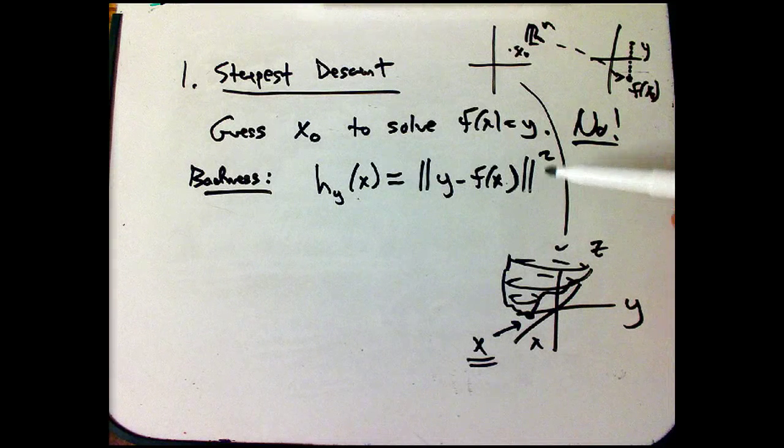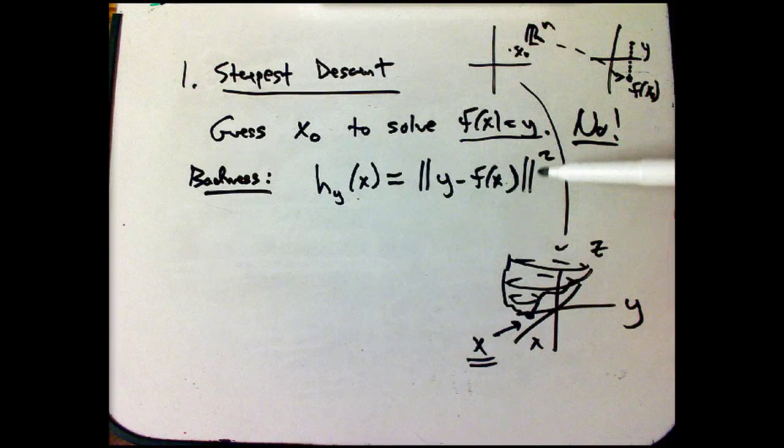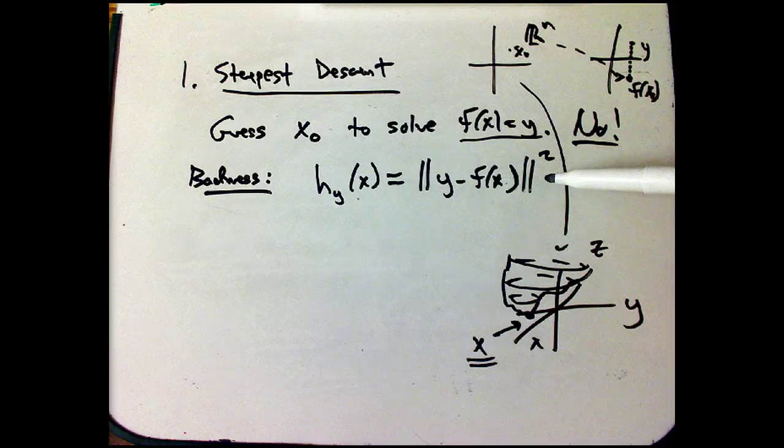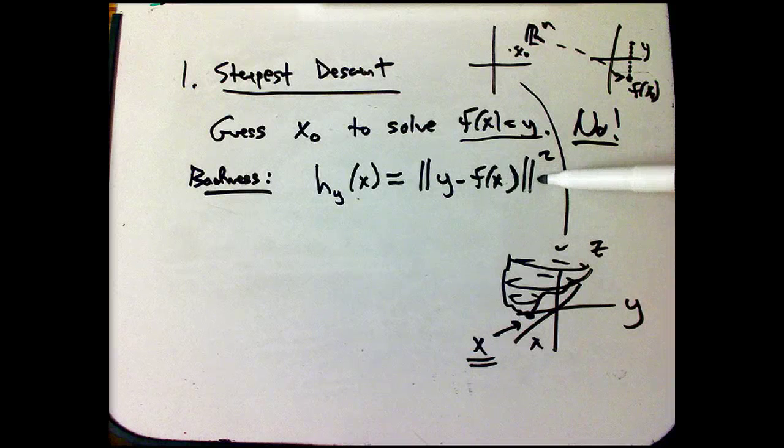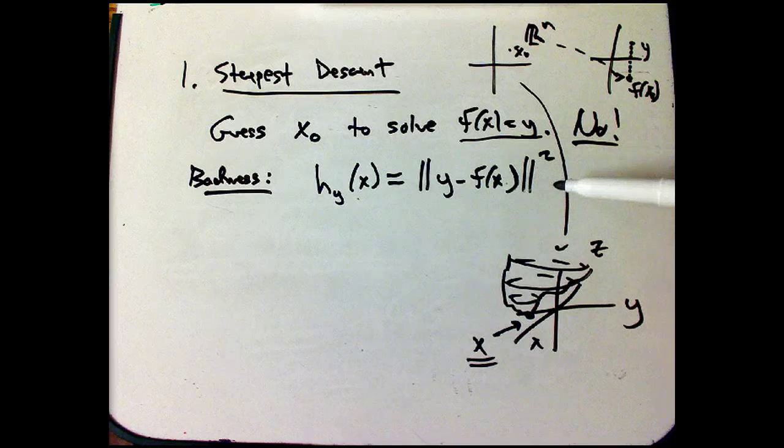So it's a very common thing. Instead of asking, yes or no, have I solved the problem, say, how close am I to solving the problem? And sometimes you just don't actually try to solve the problem. You just minimize this guy, and you don't get zero, and that's life. That's least squares.